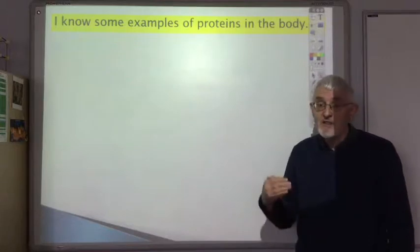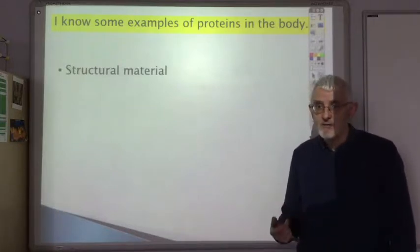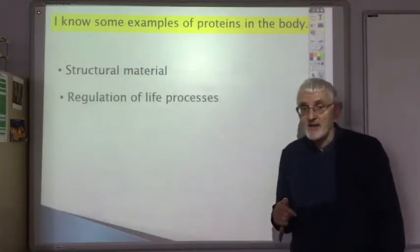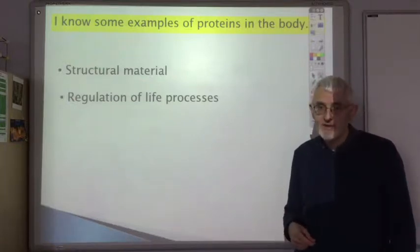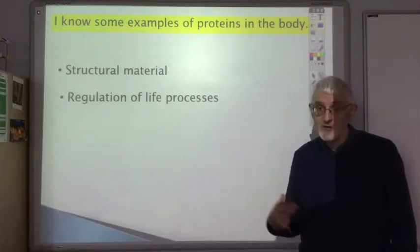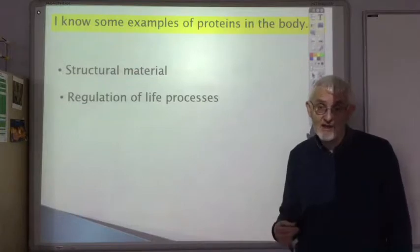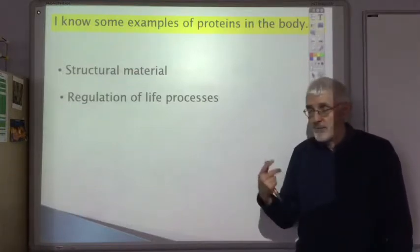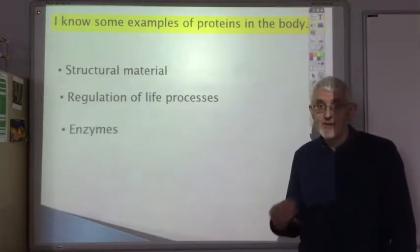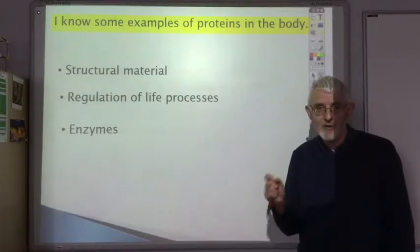The body contains thousands and thousands of different proteins. Some of them are used to construct structural materials like muscles, hair, toenails, and fingernails. Others are used in the regulation of life processes — things that keep the body working. For example, hemoglobin in the blood, which carries oxygen around the body, is a protein. Insulin, which controls blood sugar levels, is a protein. A subset of proteins are the enzymes, which are substances that speed up biological reactions. All enzymes are proteins.